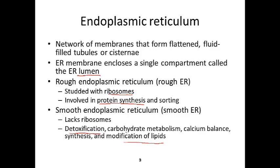The smooth ER also detoxifies poisons, serves as a metabolic center in the liver for carbohydrate metabolism, and stores calcium in your muscles — we call it the sarcoplasmic reticulum, but it is the smooth ER. So the smooth ER serves a variety of roles within the cell.